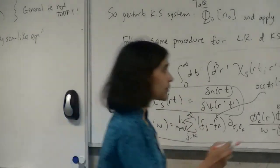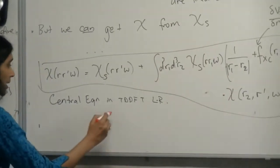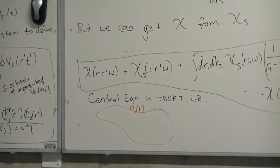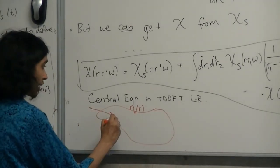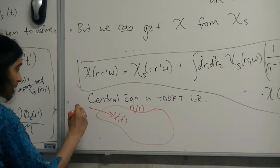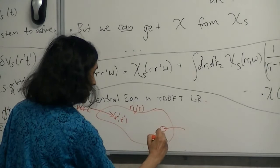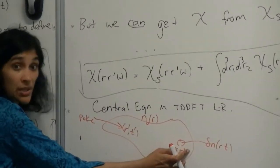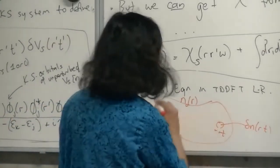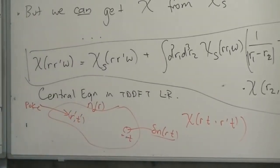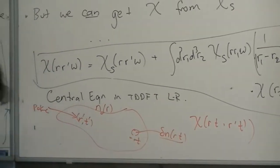Physically, what does chi mean? If we have our blob of matter with density N of R, chi tells us: if we poke the system here at R prime, T prime, this tells us how the system over here at R, T responds. You poke something here, and because of the interactions, there's a response of the system to that poke over at R — this response is given by chi of R, T, R prime, T prime. That's what the response function tells you physically.